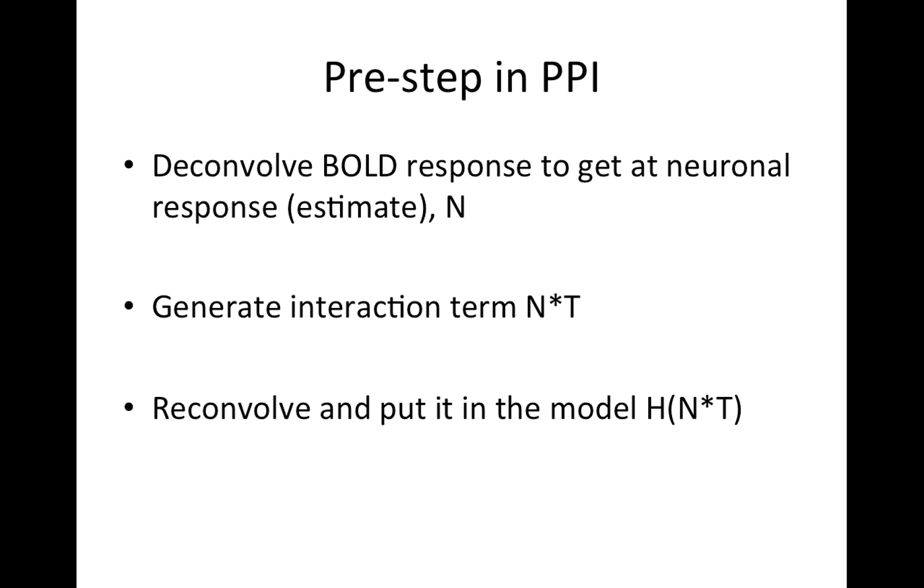So that's what this pre-step is in a PPI analysis. Before we can actually construct the model, we have to create that interaction term. So we do this by deconvolving the bold response to get at the neuronal response. So we have an estimated neuronal response. If I was being really technical here, I would have put a little hat on this n because it would have been an estimate. Then what we're going to do is then we can take the interaction of the neuronal response in our task. The task we know, in this case, the task will just be the boxcar without convolution. And then we can reconvolve it and put that into the model.